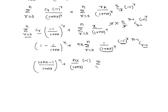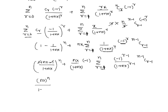So we get sigma from r=0 to n of (-1)^(r-1) divided by (1+nx)^(r-1) times (n-1)C(r-1). When r=0, the term becomes 0, so we can change the lower limit to r=1. Similarly for the other sigmas, the lower limit changes to r=1. This gives us (nx/(1+nx))^n for the first part.